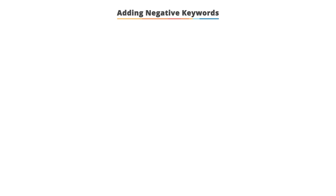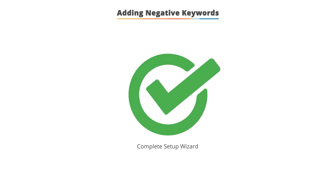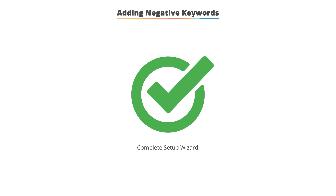In addition, there are times we want to block our ad from showing for certain terms. These are known as negative keywords. Negative keywords stop your ad from showing if your negative keyword is in the user's search term. You can only add negative keywords once you've completed the entire setup wizard. If this is your first ad group in an account, you're going to have to go back to the ad group to add negative keywords.